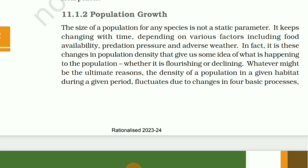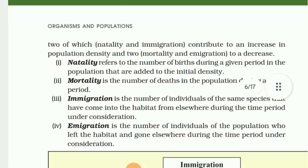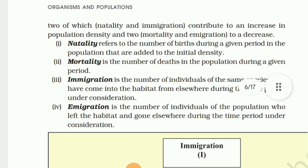Does the growth of a population with time show any specific and predictable pattern? We have been concerned about unbridled human population growth and problems it creates. It is natural to become curious whether different animal populations in nature behave in the same way or some show restraints on growth. Perhaps we can learn a lesson from nature on how to control population growth.